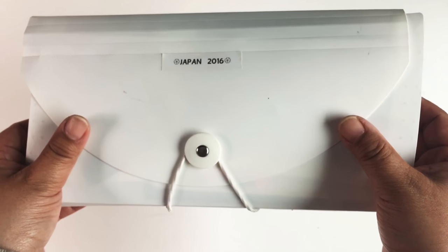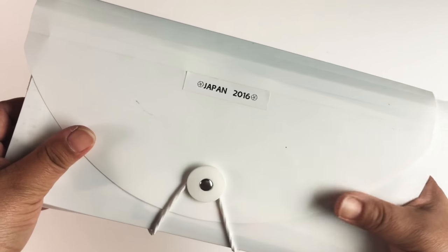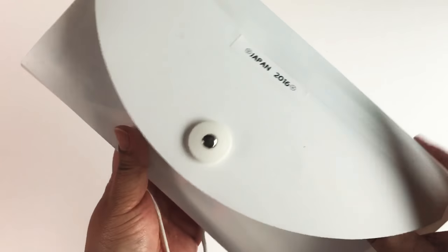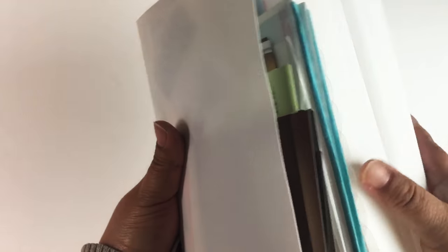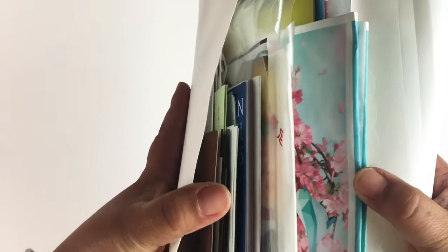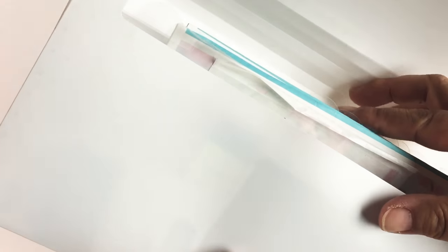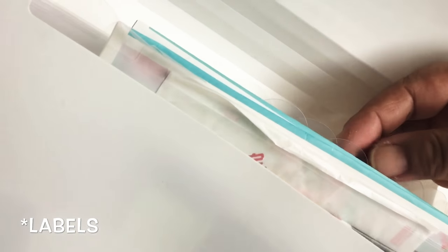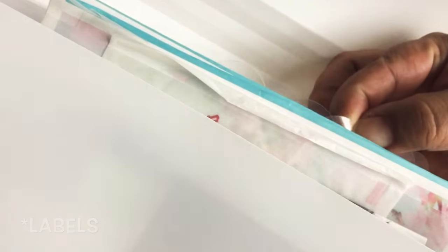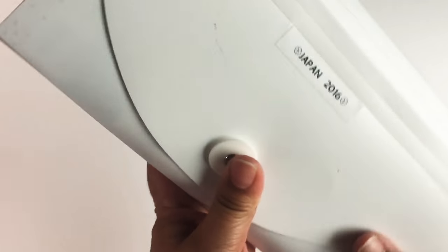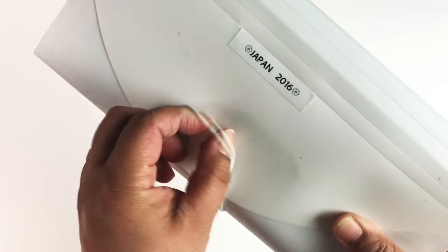Sometimes I'll bring an accordion folder, and this is just easier if I have a lot of ephemera that I'm collecting because this one has slots. I can just use one slot for each day and easily stick them in here. I didn't do it for this one, but you can also use stickers and put them on the tabs here so you know exactly what day the ephemera came from. This one is from our Japan trip.